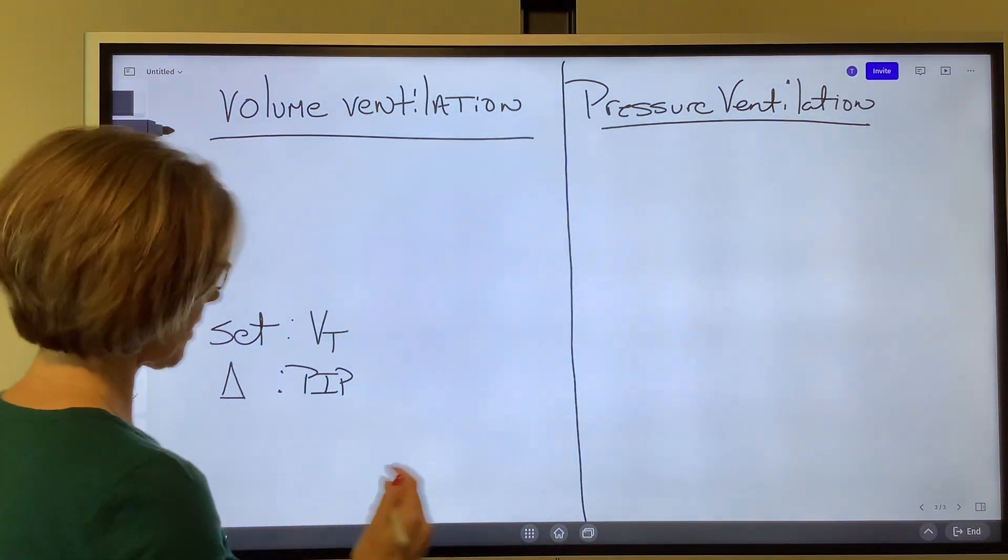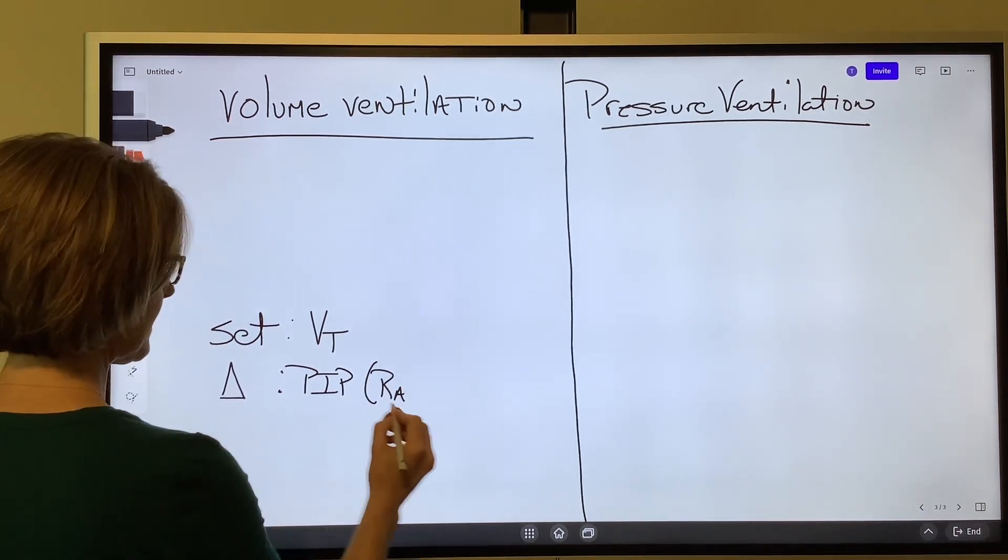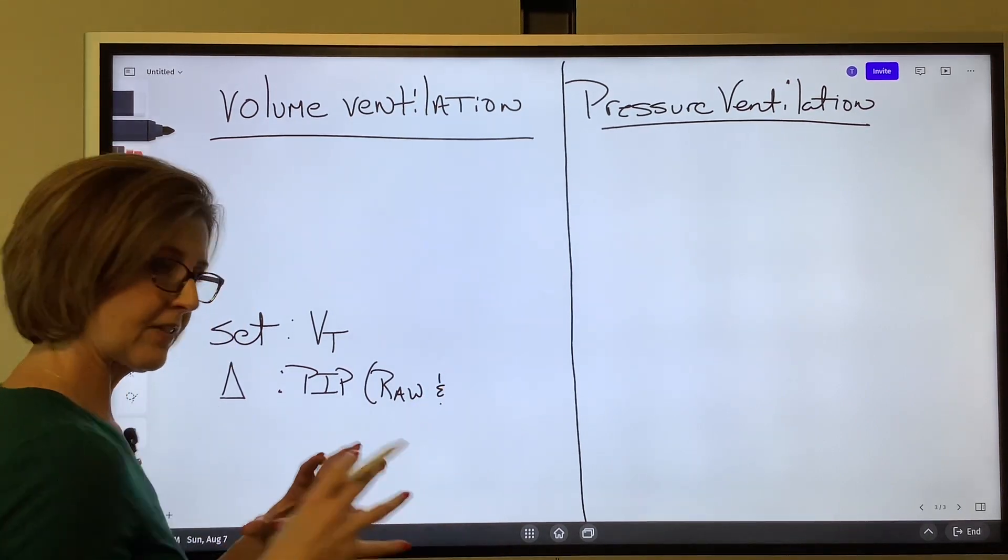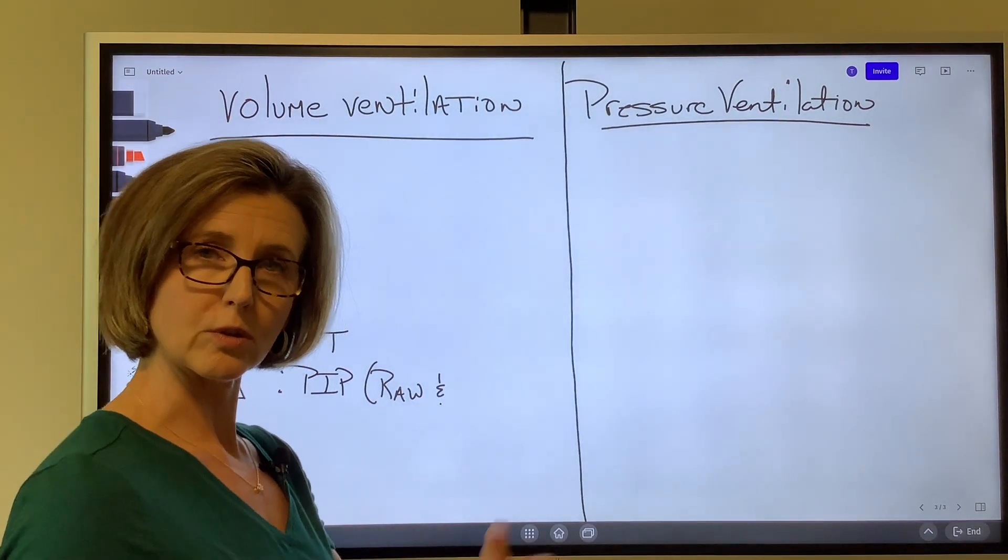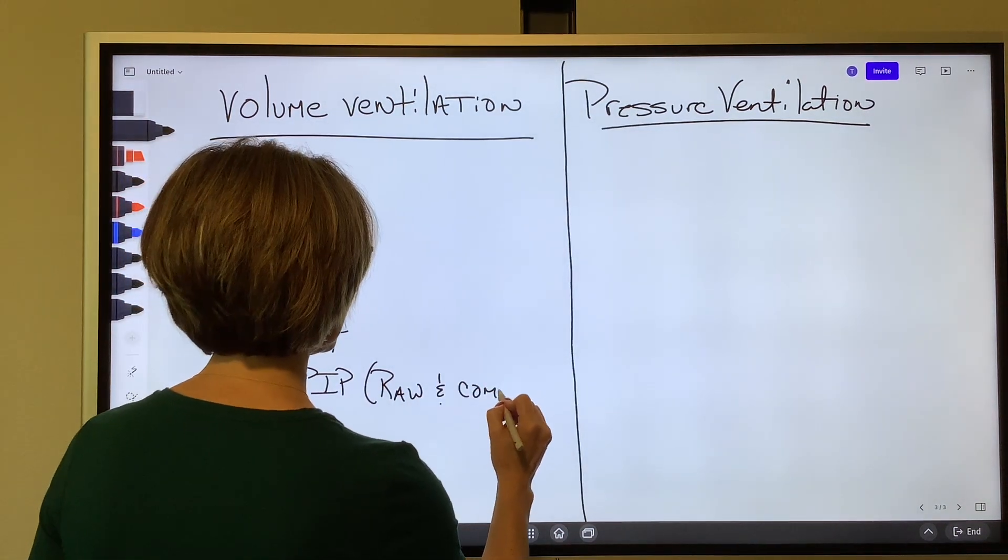So when the airway gets smaller, that peak pressure might increase. So what changes the PIP is changes in airway resistance. And if the alveoli gets stiffer or looser, that PIP will change. So airway resistance and compliance.